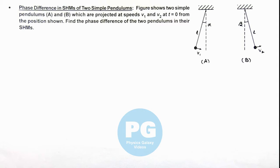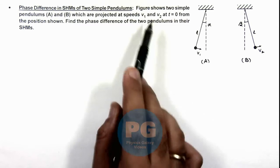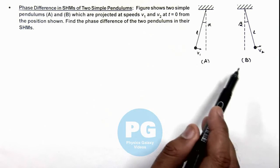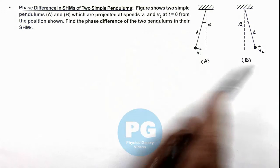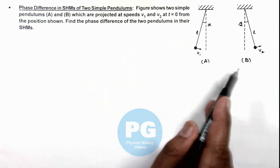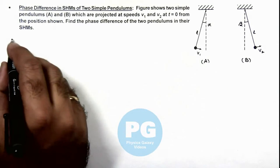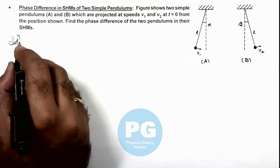In this illustration we'll discuss the phase difference in SHMs of two simple pendulums. Here the figure shows two pendulums A and B which are projected with speeds v₁ and v₂ at t equal to zero from the position shown, and we are required to find the phase difference between the two pendulums in their simple harmonic motions.